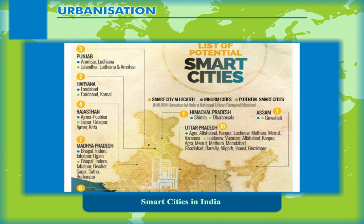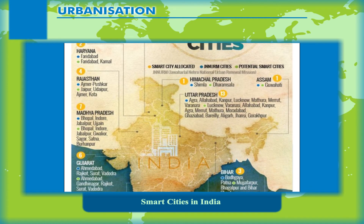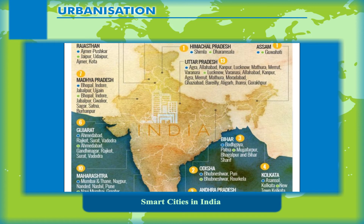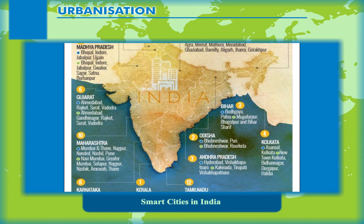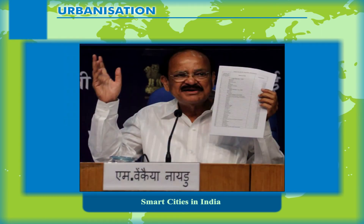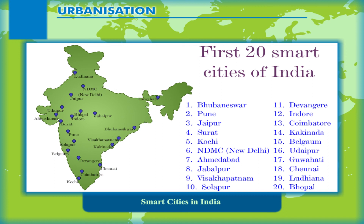The list of nominations marked the first stage in the selection process, in which state governments nominated potential cities and the centre shortlisted 100 cities. In August 2015, the Government of India released the list of nominees comprising 98 cities, including many state capitals. The Ministry of Urban Development received proposals from 97 cities for first-year financing from 2016 onwards. Of the selected 20 cities, Bhubaneswar topped the list, followed by Pune and Jaipur.